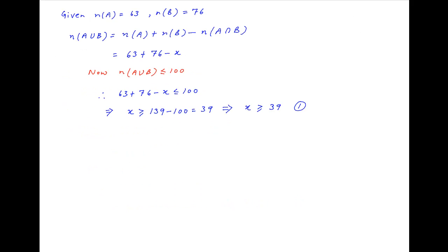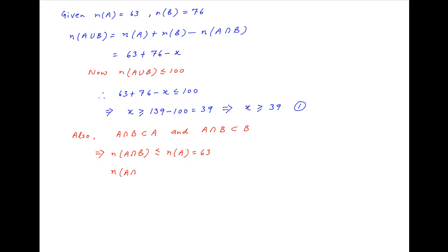We note that the set A intersection B, or people who like both apples and cheese, is a subset of people who like cheese, and similarly A intersection B is a subset of people who like apples. Therefore, the number of people in A intersection B is less than or equal to the number in set A, which is 63. Similarly, the number in A intersection B is less than or equal to the number in set B, which is 76.